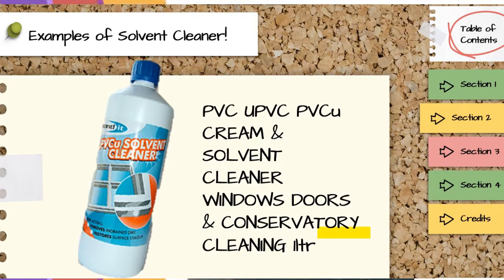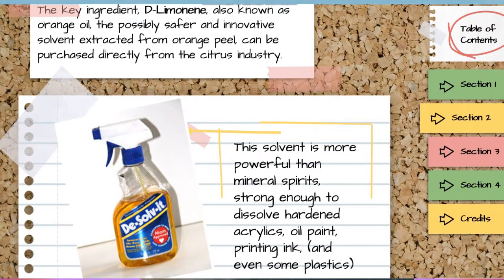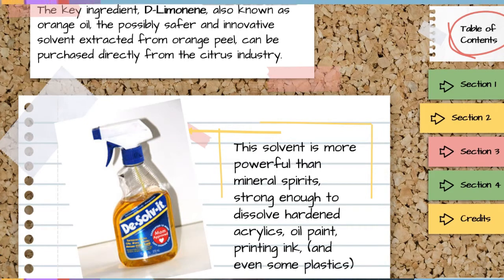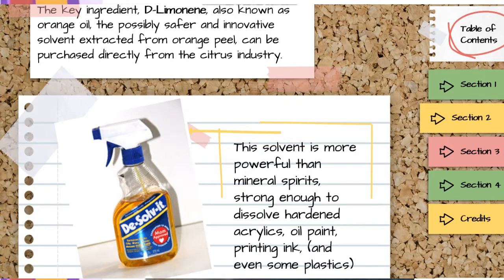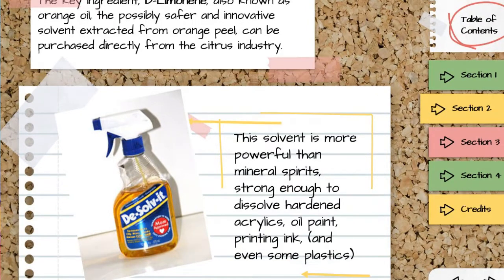Examples of solvent cleaners: the Phoebe CU solvent cleaner, used for removing stains from glass surfaces or windows and doors. Next is the D-Solvent, which has a lemon content. Its key ingredient is D-Limonene, also known as orange oil — a possibly safer and innovative solvent extracted from orange peel, purchasable directly from the citrus industry. This solvent is more powerful than mineral spirits, strong enough to dissolve hardened acrylics, oil paint, printing ink, and even some plastics.